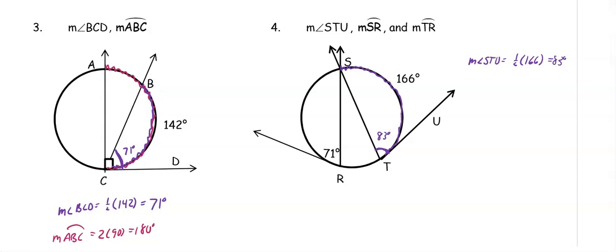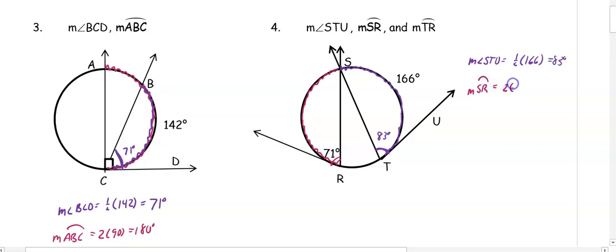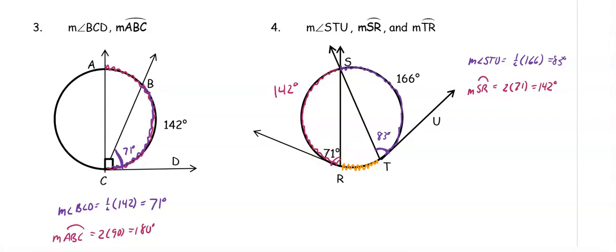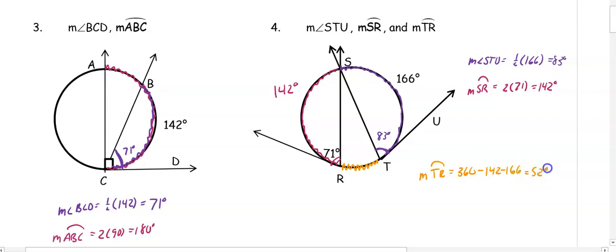Working the other direction to find arc SR: SR is intercepted by an angle of 71 degrees, so we double it — 2 times 71 gives us 142 degrees. For arc TR, the purple arc of 166 degrees and the dark pink arc of 142 degrees cover most of the circle. So arc TR equals 360 minus 142 minus 166, which gives us 52 degrees.